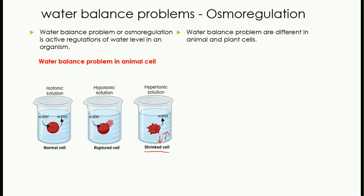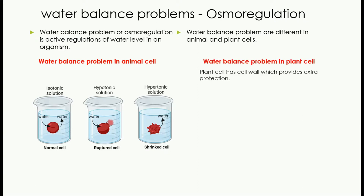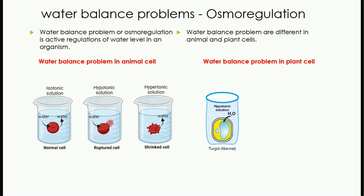Now let's talk about water balance problems in plant cells. Plant cells have a cell wall which provides extra protection. If a plant cell is placed in a hypotonic solution — which has high water potential and low solute concentration — water will start moving from outside into the cell and will push pressure on the cell membrane. But because there is an extra layer of cell wall, it will prevent the bursting of the plant cell, and the cell will be present in a turgid form.